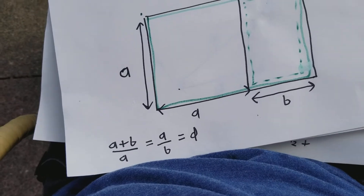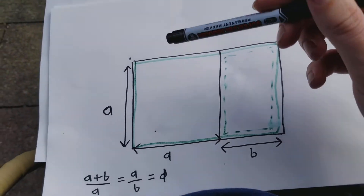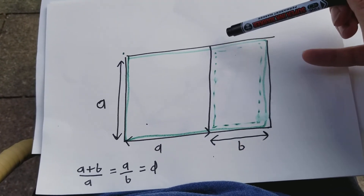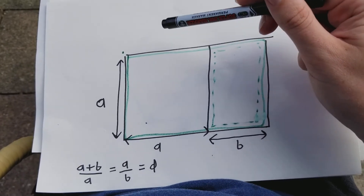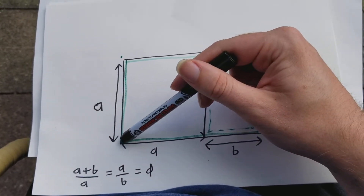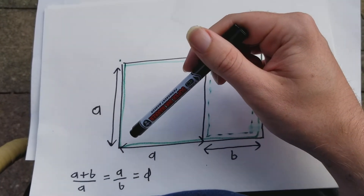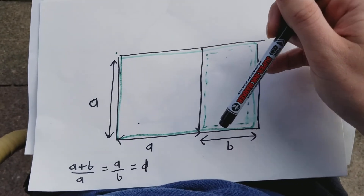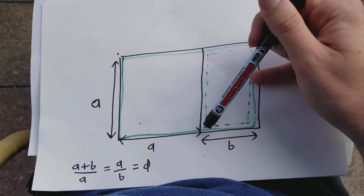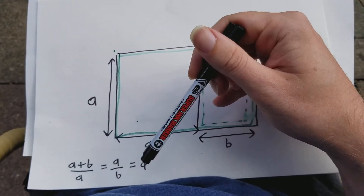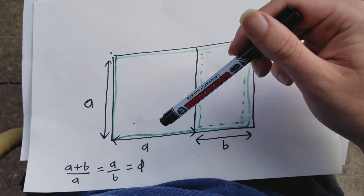Another way to talk about the golden ratio is in terms of golden rectangles. Imagine that a solid green rectangle is similar to a dotted green rectangle. Then the ratio of A to B will be the golden ratio. In other words, if the length of the long side of the solid green rectangle, which is A plus B, divided by the length of the short side A, equals the long dotted side A divided by the short dotted side B — if we assume that and do the math, we find out that this ratio is the golden ratio.